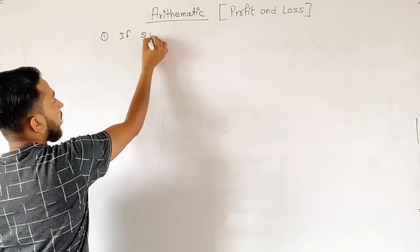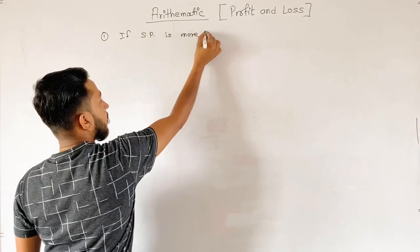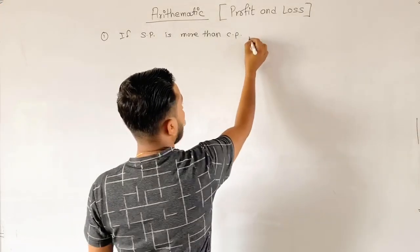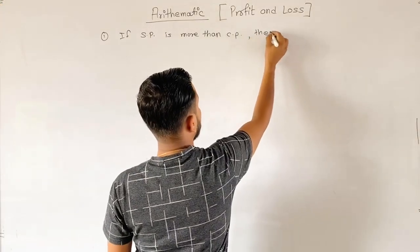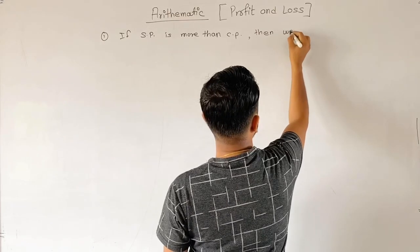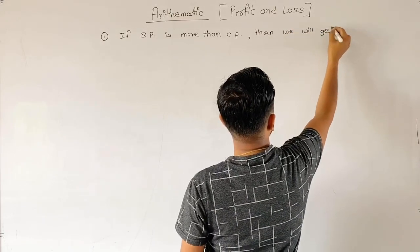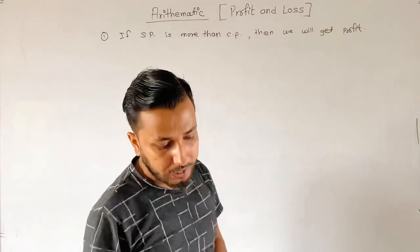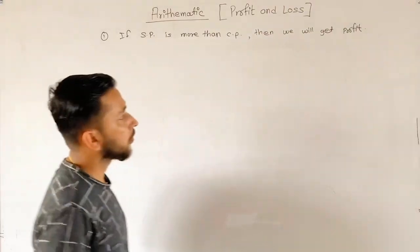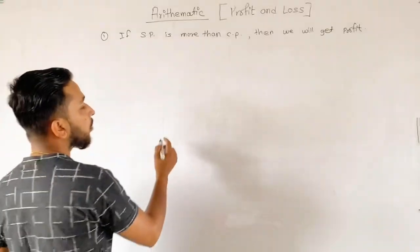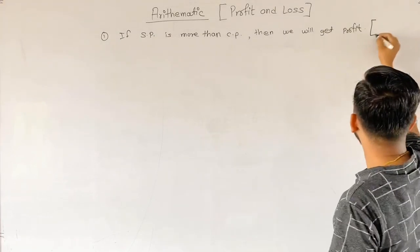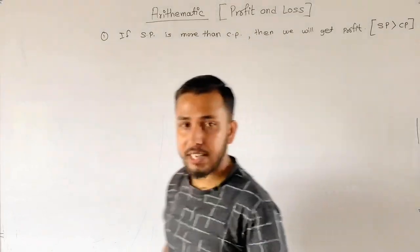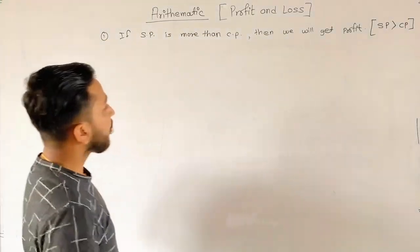If selling price is more than cost price, we will get Profit. Commonly, if SP is greater than CP, then there will be Profit. If the value of selling price is more than cost price, you have Profit.